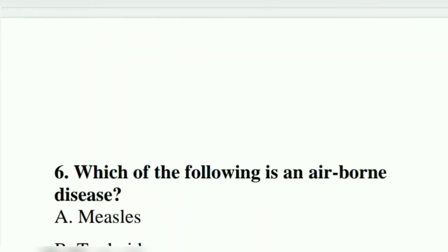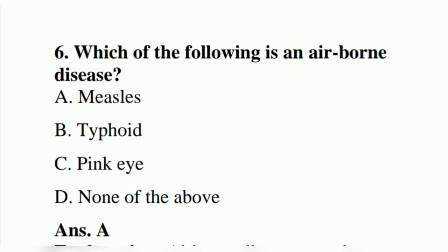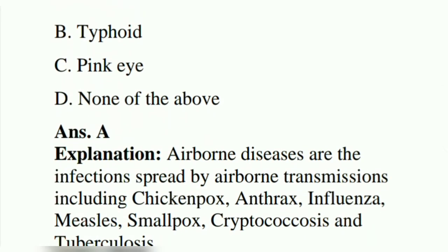Sixth question: which of the following is an airborne disease? Option A: measles. Option B: typhoid. Option C: pink eye. Option D: none of these. The answer is A, measles. Explanation: airborne diseases are infections spread through the air. Transmissions include chickenpox, anthrax, influenza, measles, smallpox, and tuberculosis.